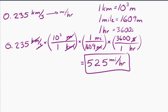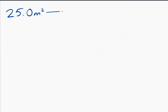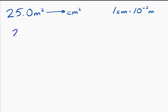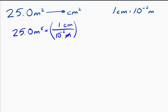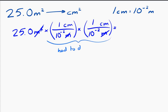The last idea we'll look at is when you have a unit taken to a power. Say I have 25 square meters and want to convert to square centimeters. I know that 1 centimeter equals 10 to the minus 2 meters. But I don't just have meters — I have meters squared. If I write down one conversion factor, that only gets rid of one of the meters. So I have to apply that conversion factor twice to get rid of the meters squared, and I'm left with centimeters squared — 250,000 centimeters squared.